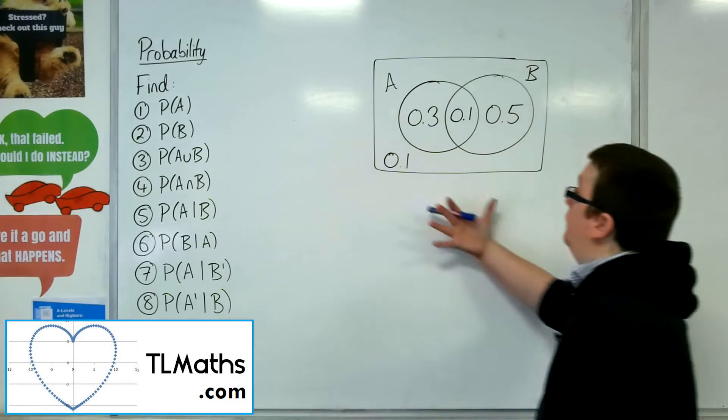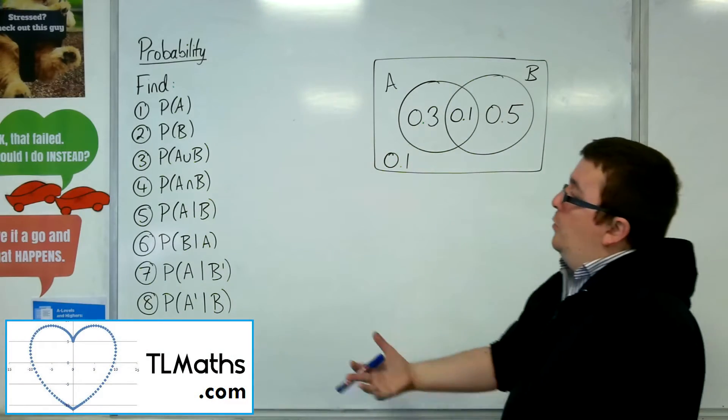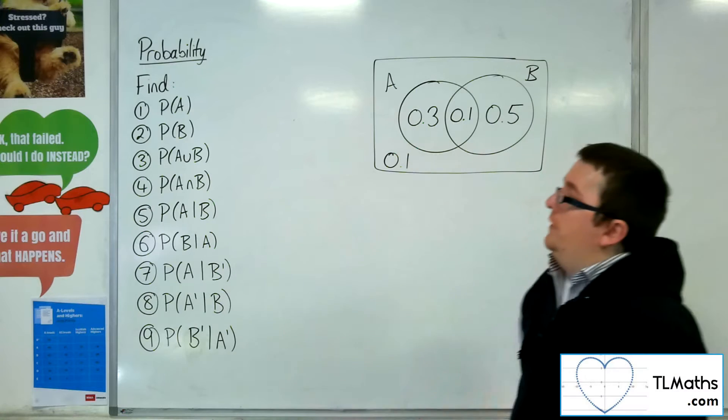Okay, so here is a Venn diagram, and I want to find the probabilities of each of these.